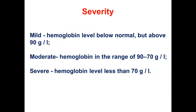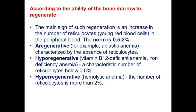By severity, we divide anemia into three stages: mild, moderate, and severe. Mild anemia is when hemoglobin level is below normal but above 90 gram per liter. Moderate is hemoglobin in the range of 70 to 90 gram per liter. Severe is when hemoglobin is less than 70 gram per liter.